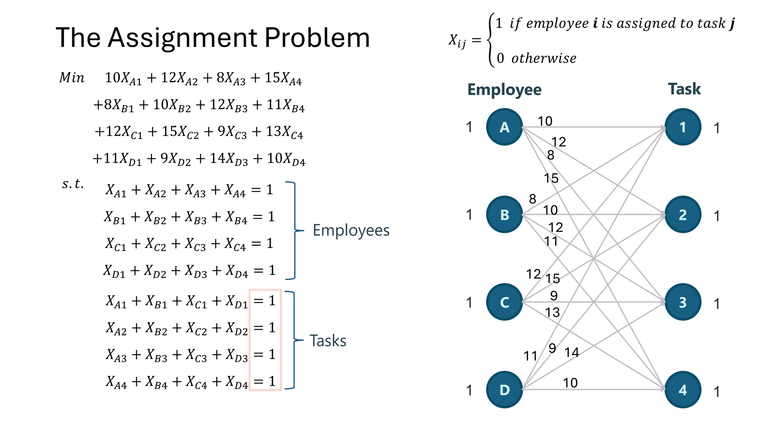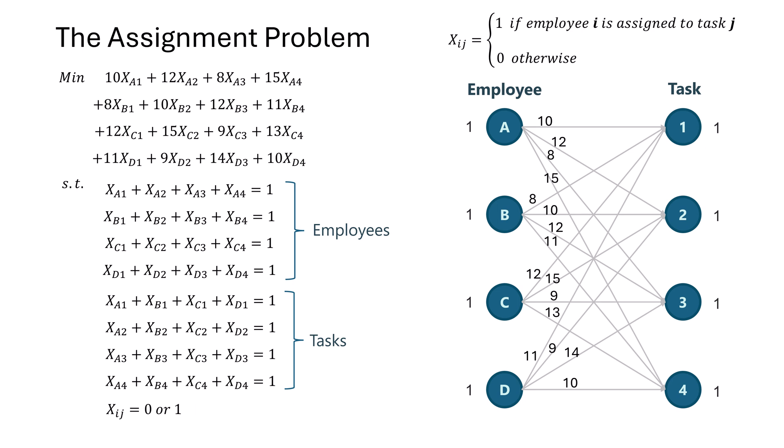Finally, we add the binary constraints: x_ij must be either 0 or 1. This is essential because we cannot assign half an employee to a task. And there you have it — the complete linear programming formulation of the balanced assignment problem.